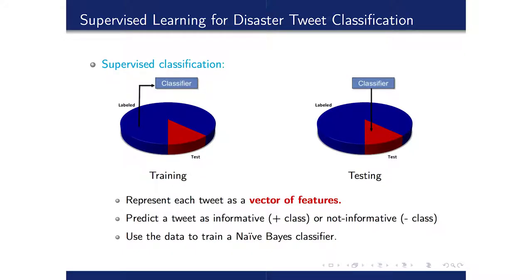In supervised learning, we have a training set — the labeled part — where we have a tweet and its class: informative or not informative. We have a collection of labeled tweets and then unlabeled tweets in the test set, whose class we don't know. We represent each tweet as a vector of features, then predict whether a tweet is informative (positive class) or not informative (negative class), using the data to train a Naive Bayes classifier. We train the classifier on labeled data, and once we have the classifier, use it to assign labels to the test data.